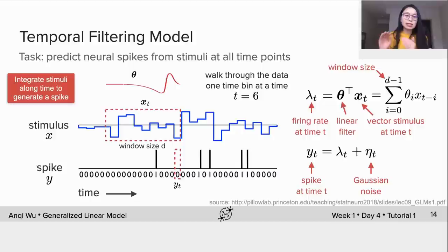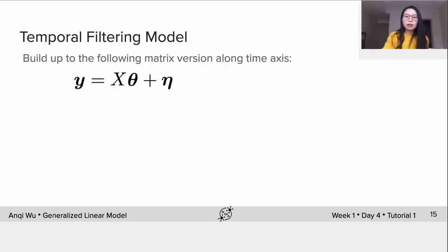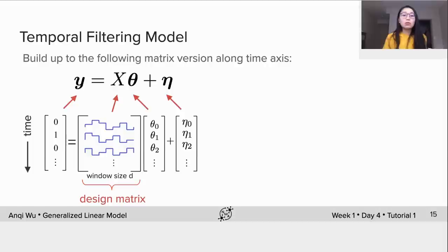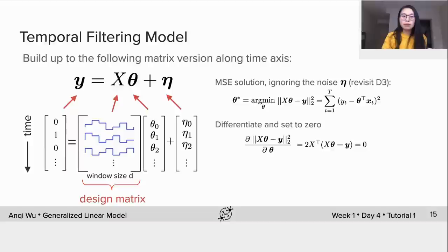We can also build it up to the matrix form like this. We can see now each row of the design matrix corresponds to a sliding window. Similar to the derivation on day 3, we can calculate optimal θ by minimizing the mean squared error. We differentiate it and set the gradient to be 0, then we arrive at this closed form expression for θ.